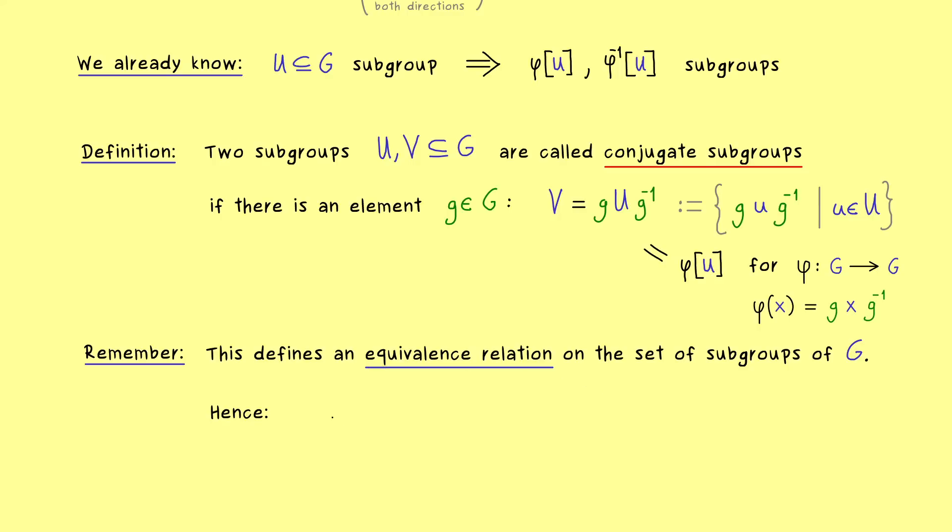Okay and now one important implication of that is if we consider the set of subgroups of G where each subgroup is represented by a circle then we find a partition of this set. More precisely we can put these elements that are given by subgroups into disjoint equivalence classes. So if you take a subgroup U it belongs exactly to one equivalence class.